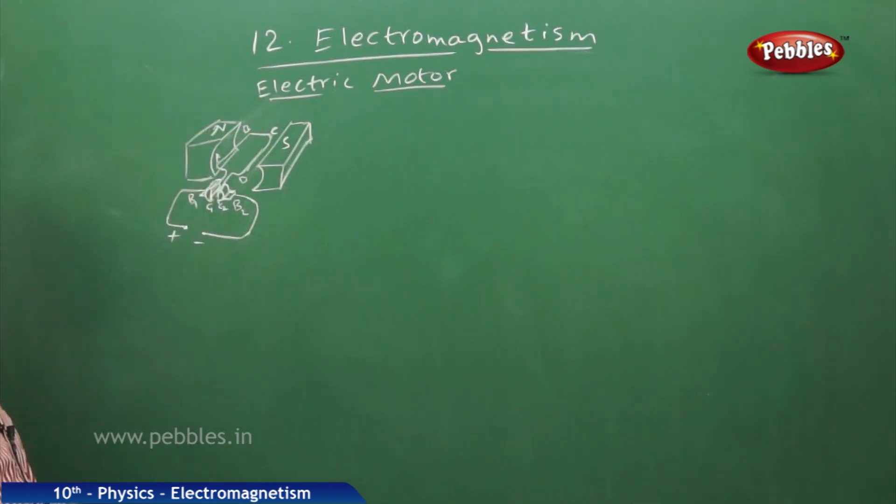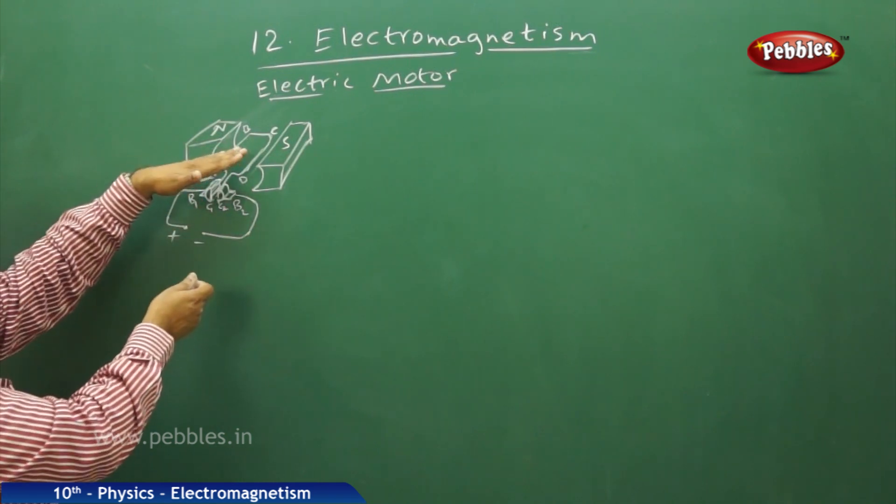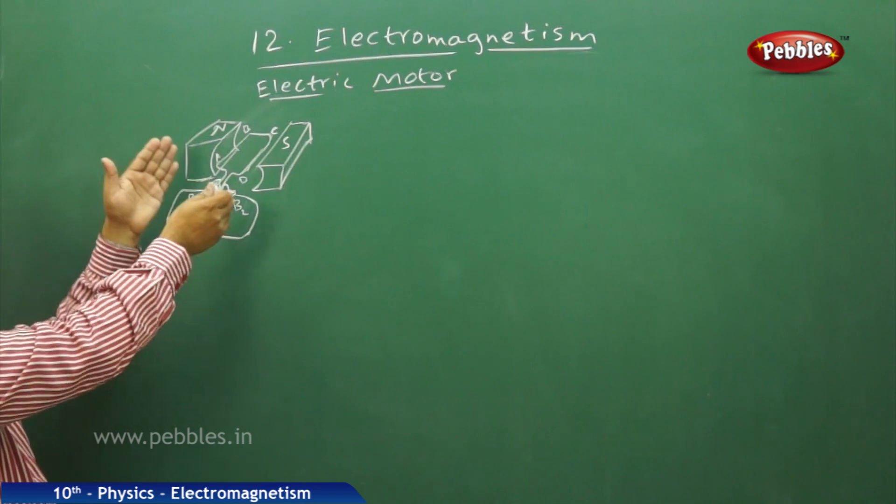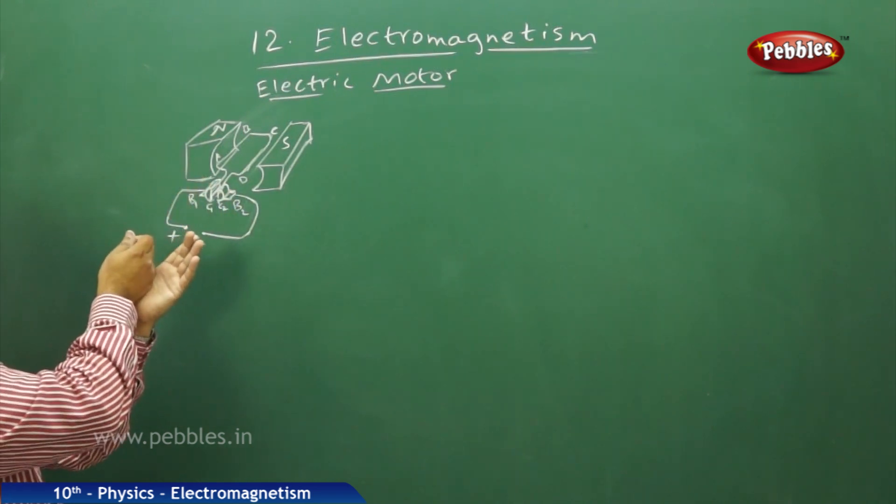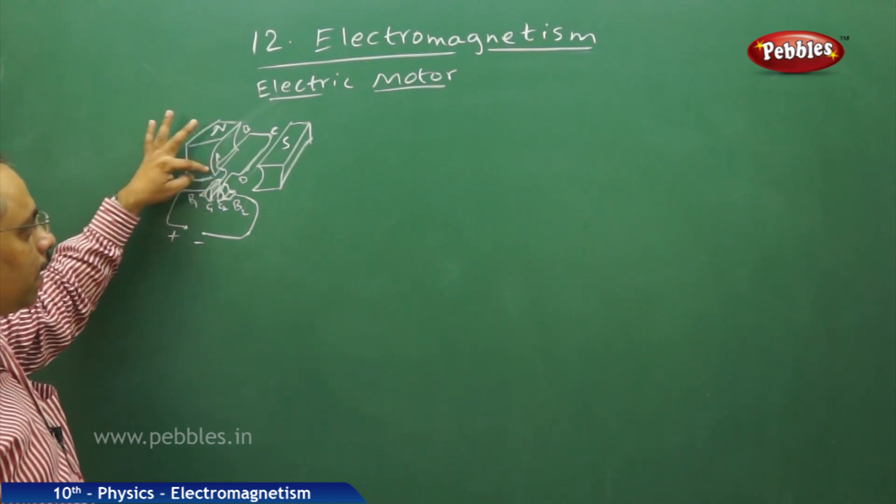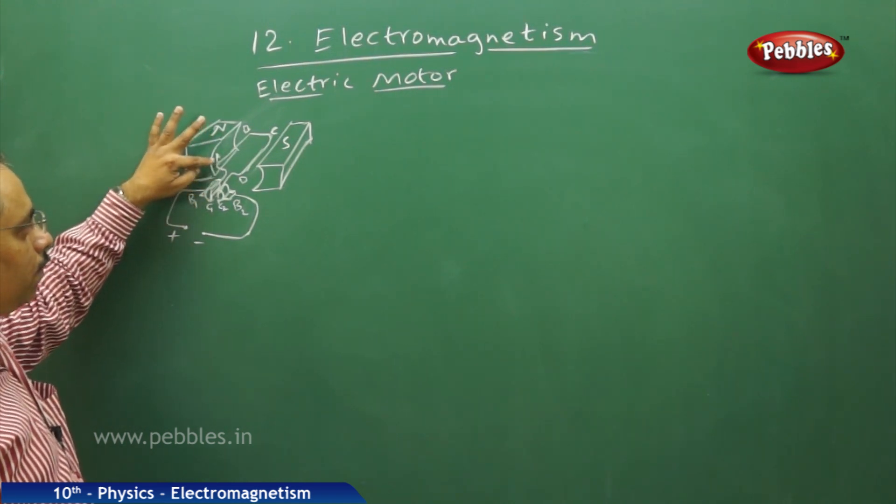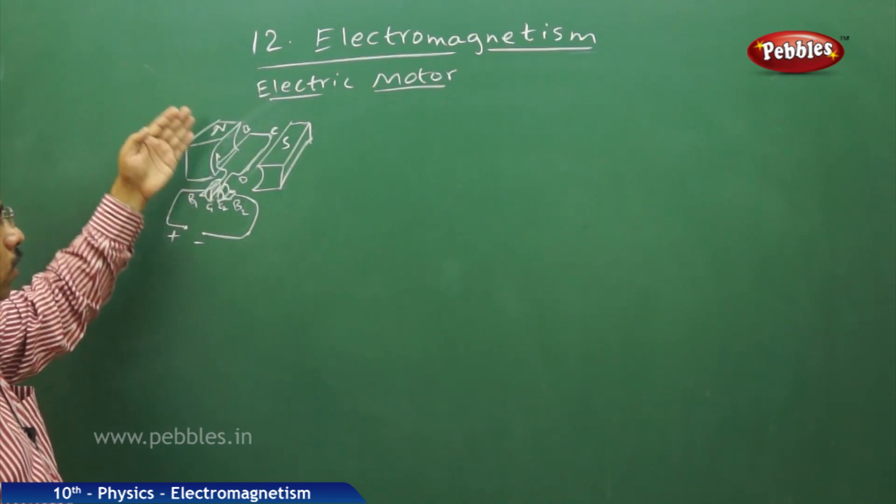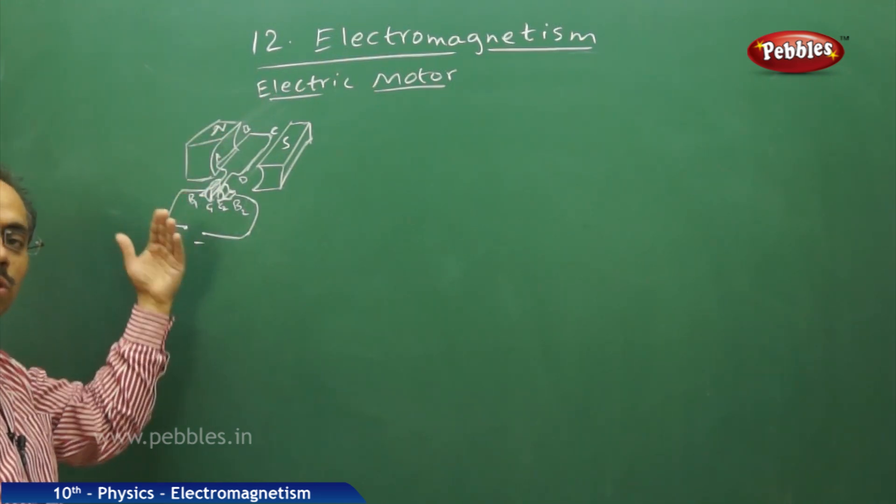Once it is going up like this, now it is horizontal, AB will go down and CD will come up. Once it is coming in this upward direction, it will not stay there. The commutator split rings are attached to the terminals of the coil. Once this AB part of the coil goes down, this commutator split ring C1 also goes down.